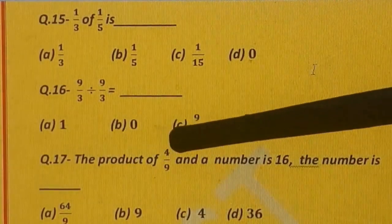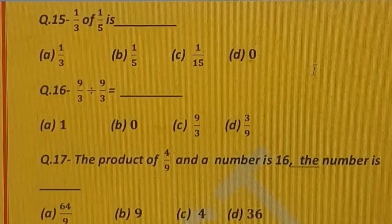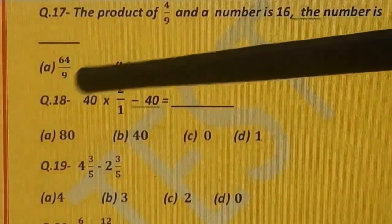Question number 17. The product of 4 upon 9 is 16. The number is dash. Options are: A) 64 upon 9, B) 9, C) 4, and D) 36.